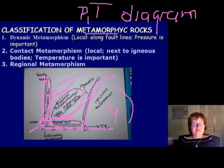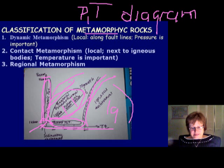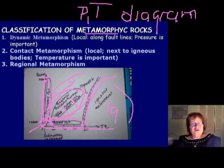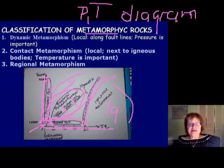In regional dynamo-thermal metamorphism, we divide the zone into three areas: low, medium, and high grade metamorphic rocks. This PT diagram is a bit different from the textbook version, but I want you to know this simplified version. It shows all three kinds of rocks and their pressure-temperature environments — it's a good summary figure to remember.